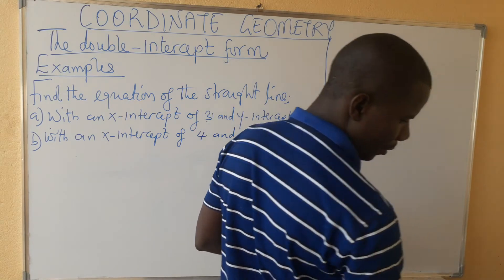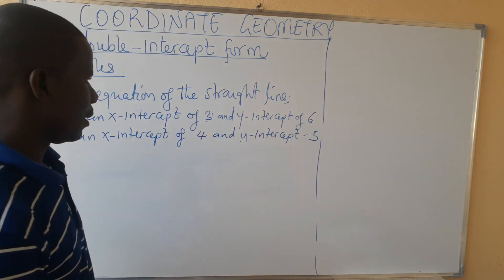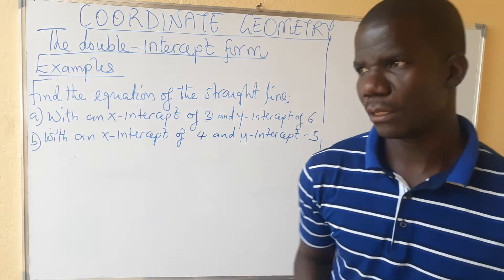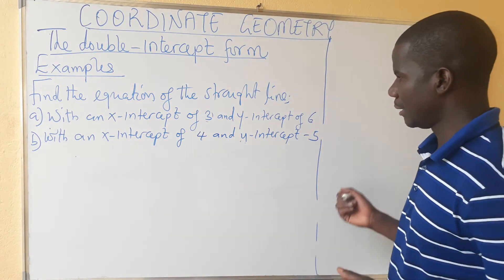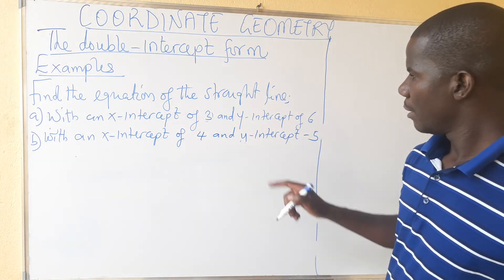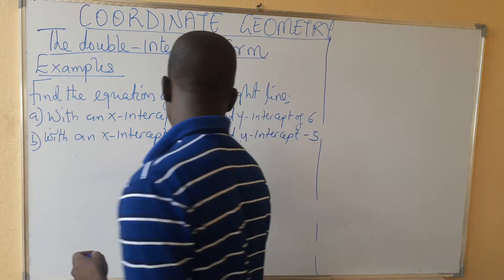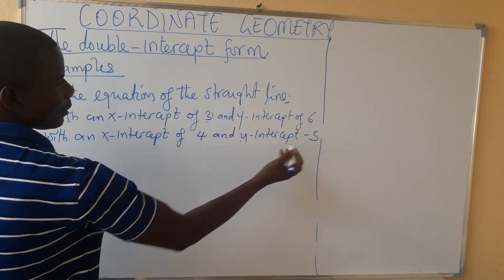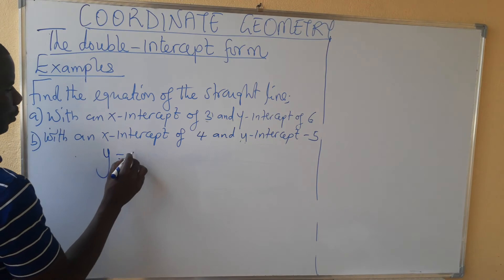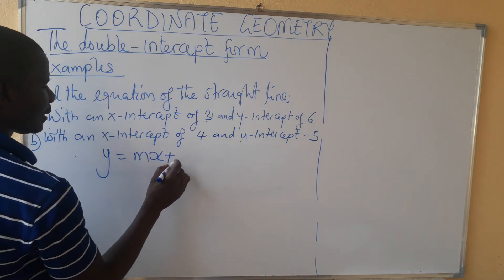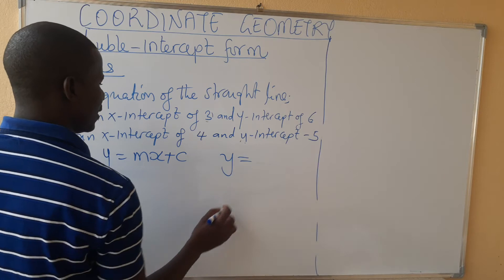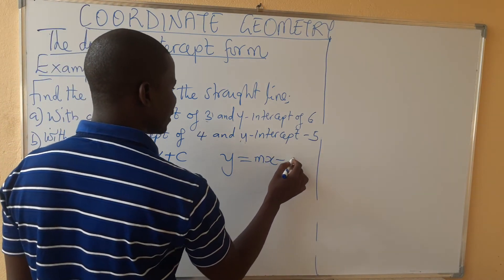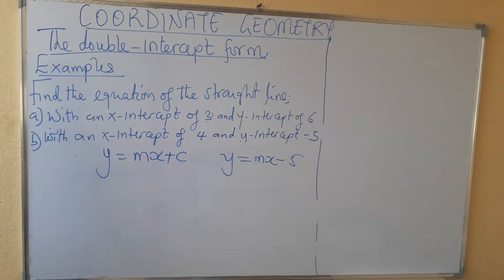Let's look at the second example. For this one I'm going to use just one method, but you can try both to get familiar. The y-intercept is already known as minus 5. So we have y equals mx minus 5.